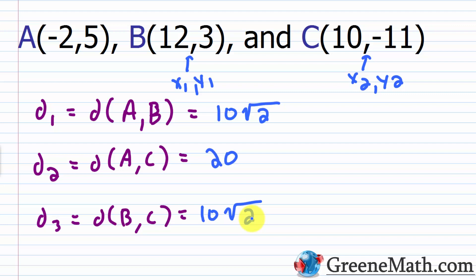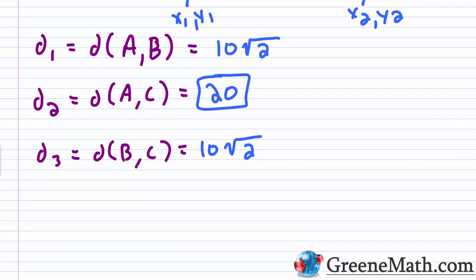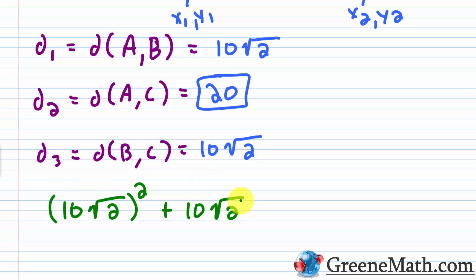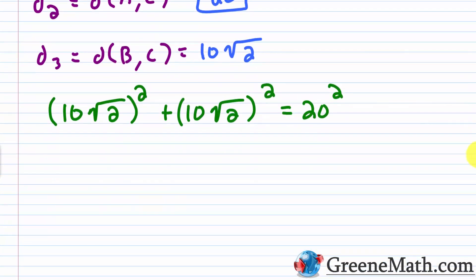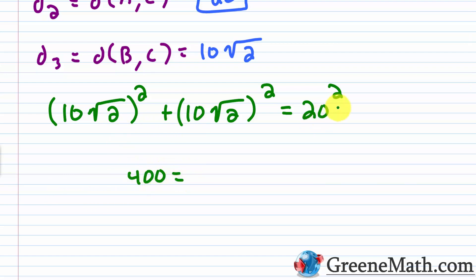Since 20 is the largest distance, it would be the hypotenuse if this is a right triangle. We need to check: (10√2)² + (10√2)² = 20²? Squaring 10√2 gives 100 × 2 = 200. So 200 + 200 = 400. And 20 squared is indeed 400. So yes, these three points — (−2, 5), (12, 3), and (10, −11) — are the vertices of a right triangle.